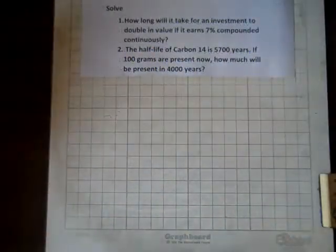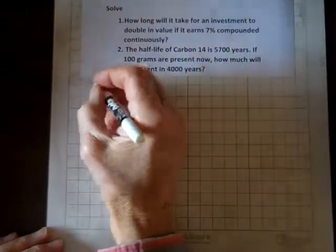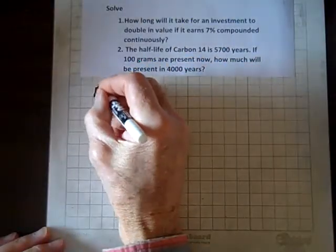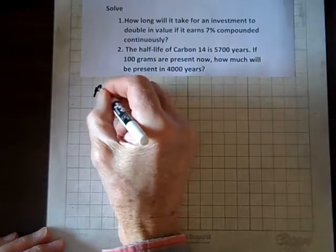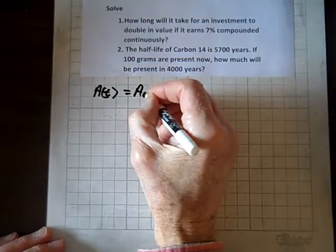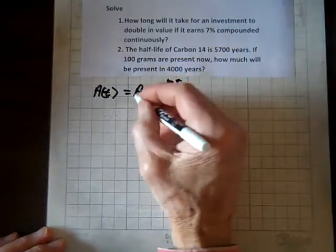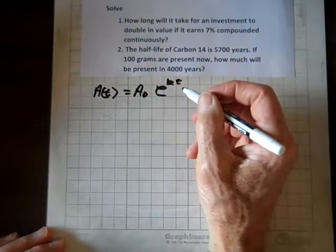Now we'll do the second problem. And we'll use the same formula except I'm going to change the letters just for the heck of it. I think the book wrote it this way. A(t), still the same equation, different letters, equals A sub 0 e to the kt.